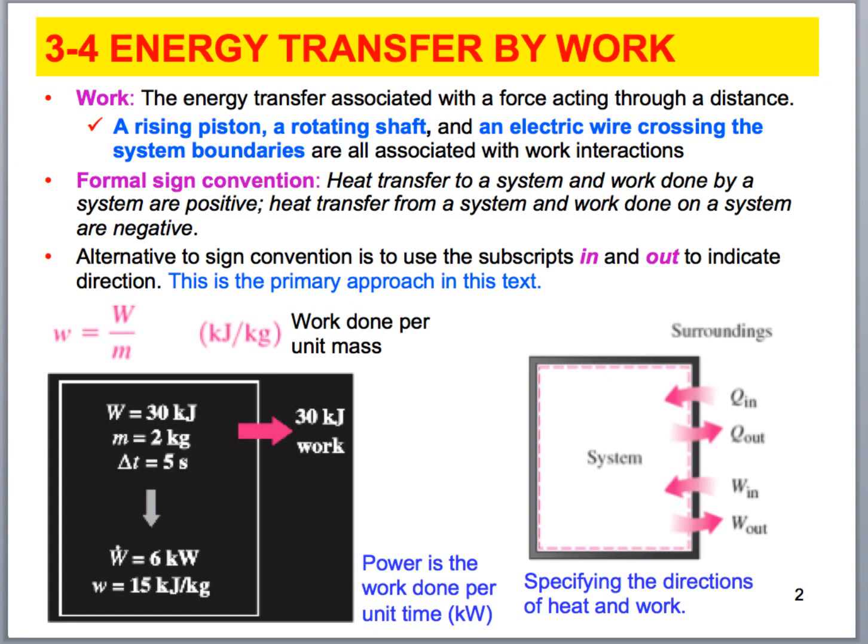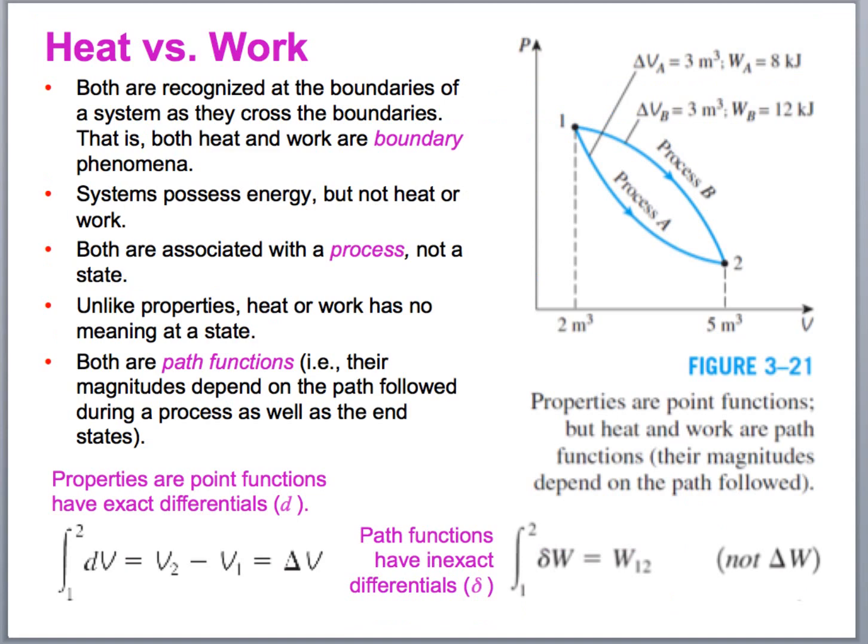Work has the same units as heat transfer. We're either going to be using kilojoules, if we're expressing in terms of energy, or if we want it per unit time, we'll be talking about watts or kilowatts. Now, what is the difference between heat and work? Well, remember, heat depends on a temperature difference. Both are acting on the system boundaries, so they can cross the system boundaries. Even in a closed system where mass is constant, we can have both heat and work cross that boundary.